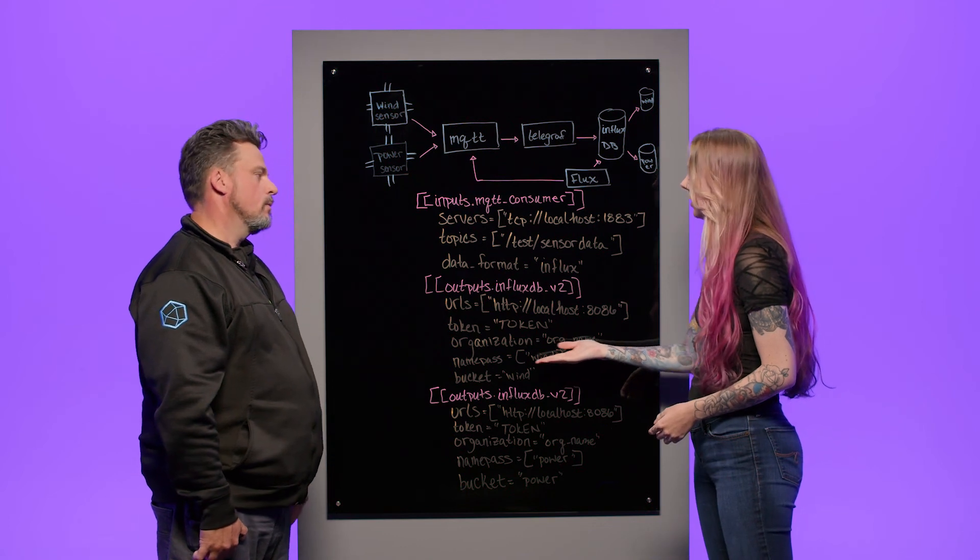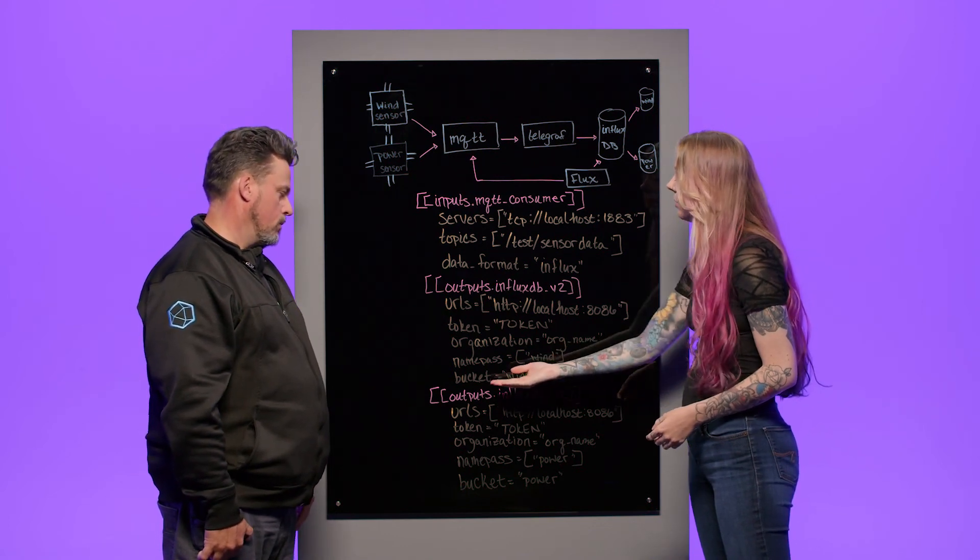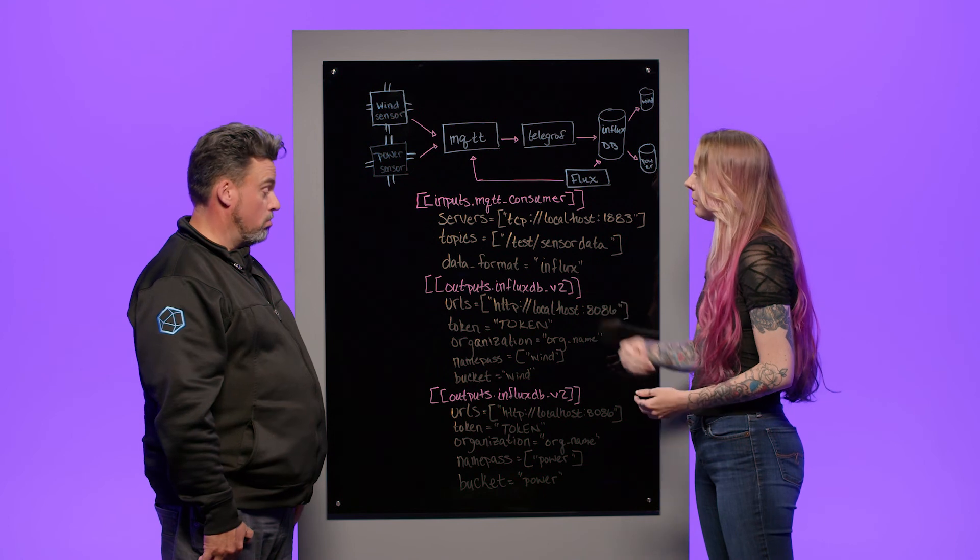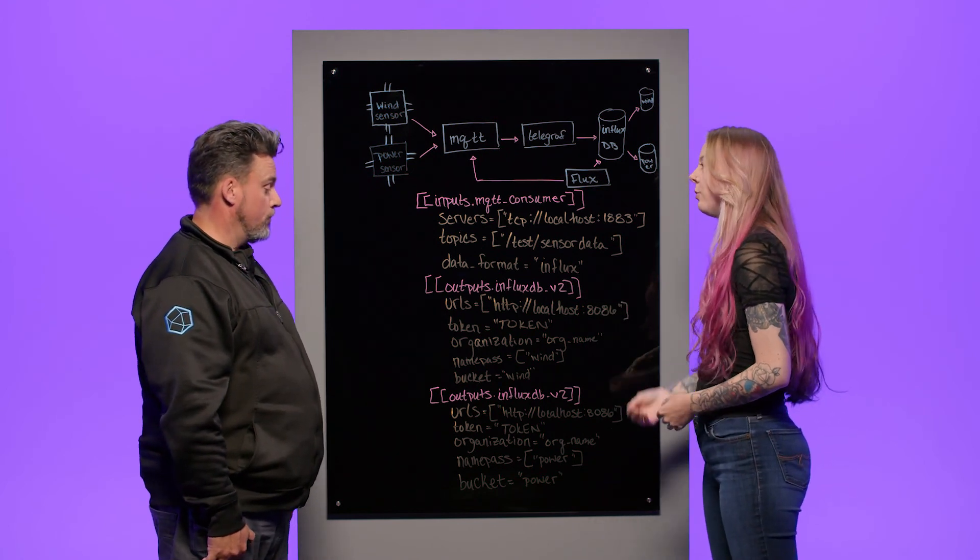Namepass is going to ensure that any metric with the name wind is going to make it into the bucket wind. So your wind metrics go to your wind bucket. Your power metrics go to your power bucket.